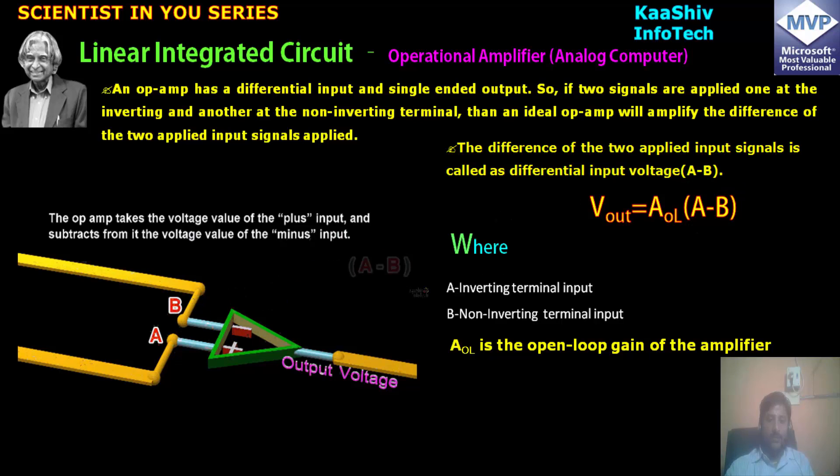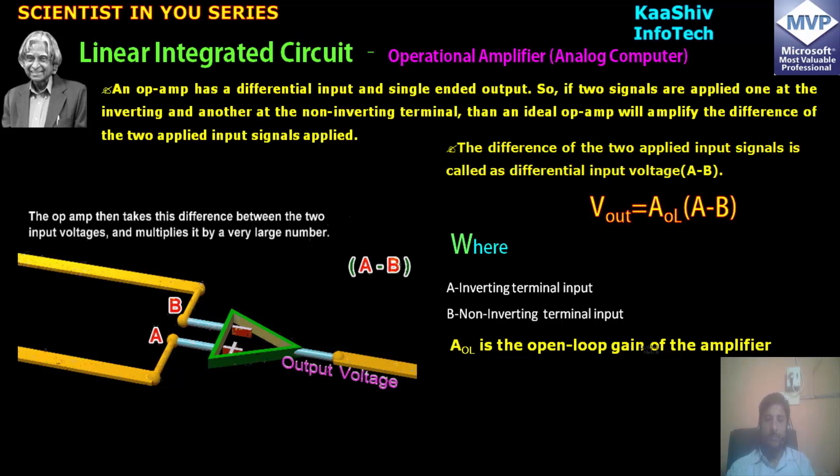I got the difference between the positive and negative terminal. Now, I am going to add this data value with a very high number. That's nothing but your open loop gain of the amplifier. You are able to see a very high number is multiplied to the difference of the voltage, positive and negative terminal.